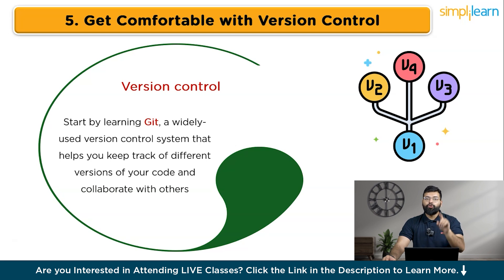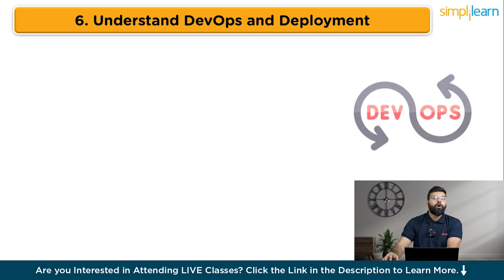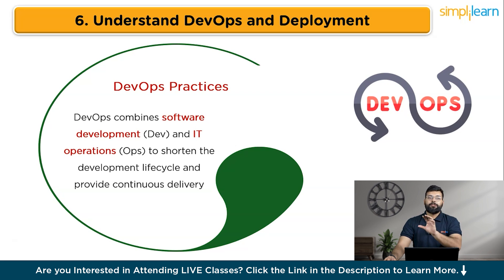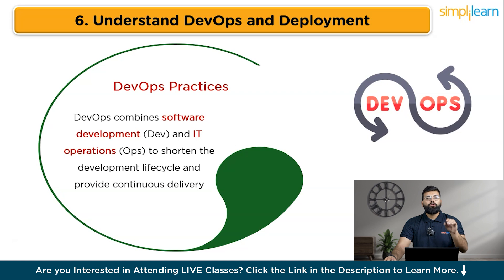With a strong understanding of version control, you are now ready to explore DevOps practices and deployment, which are crucial for delivering your applications efficiently. DevOps combines software development and IT operations to shorten the development lifecycle and provide continuous delivery. You can learn about continuous integration and continuous deployment — CI/CD pipelines — which automate testing and deployment processes. Familiarize yourself with cloud platforms like AWS, Azure, and Google Cloud, which offer services to host and manage your applications. Practicing deployment on these platforms will help you understand how to manage servers, databases, and networking, ensuring your applications are always available and scalable.